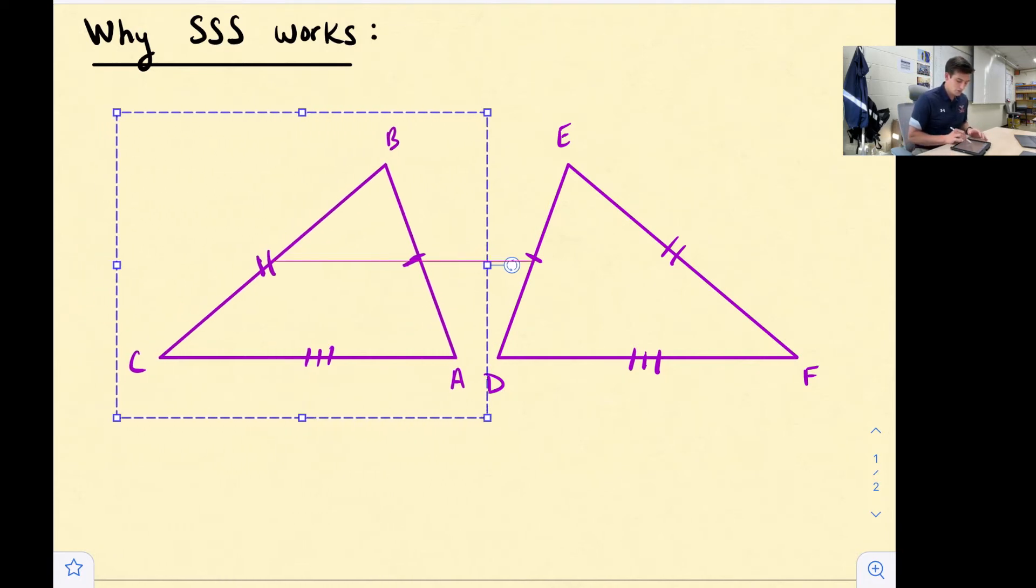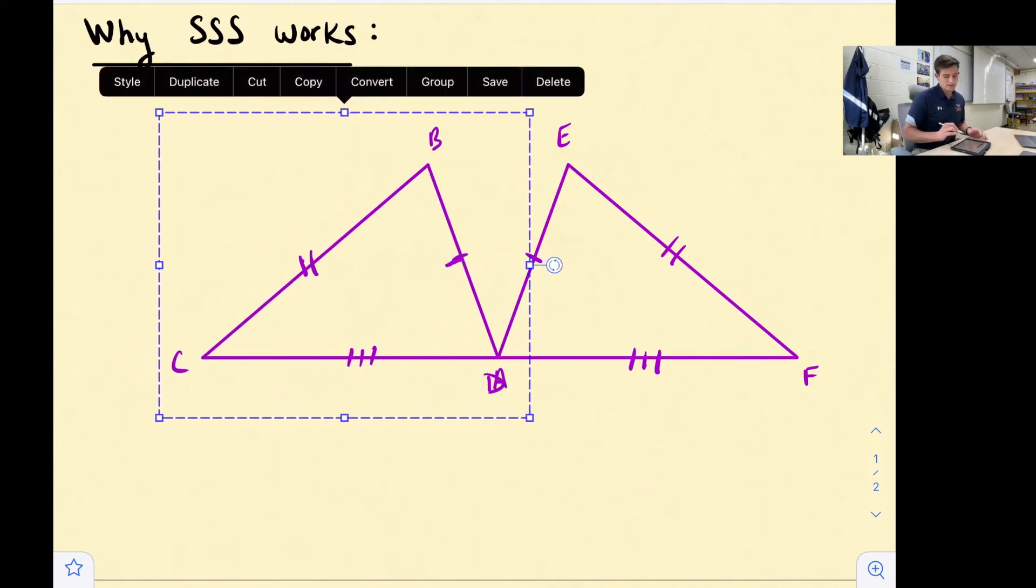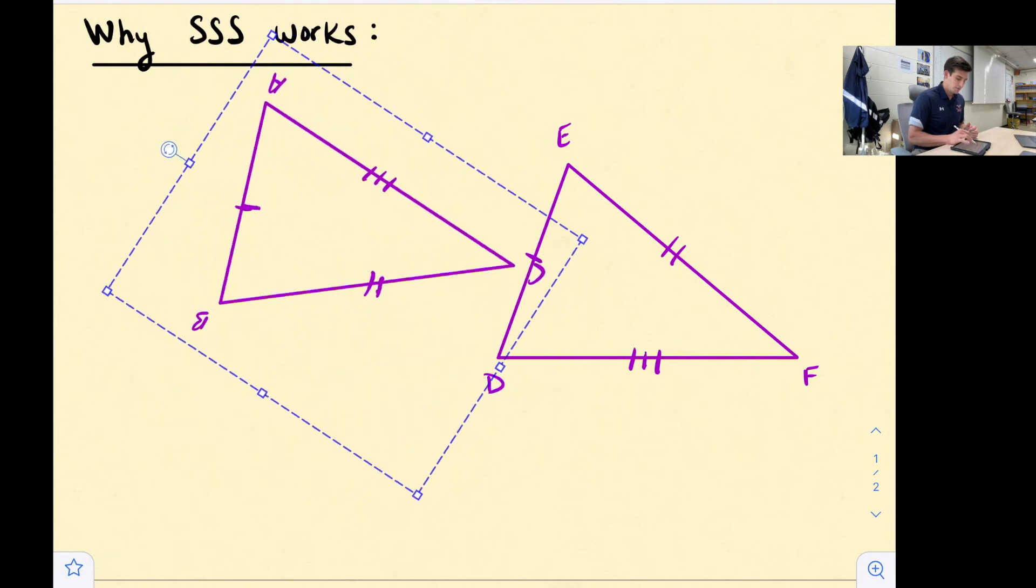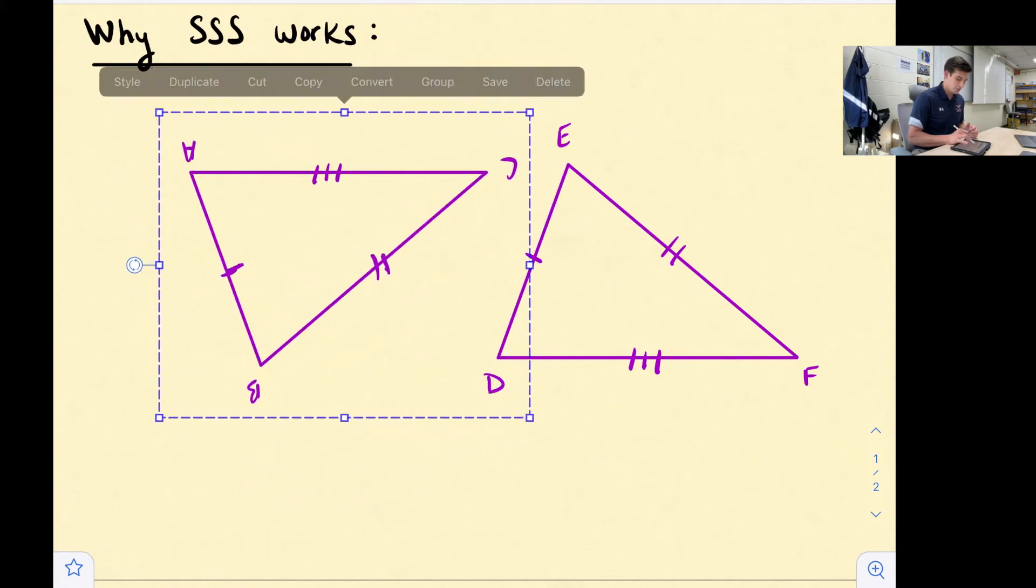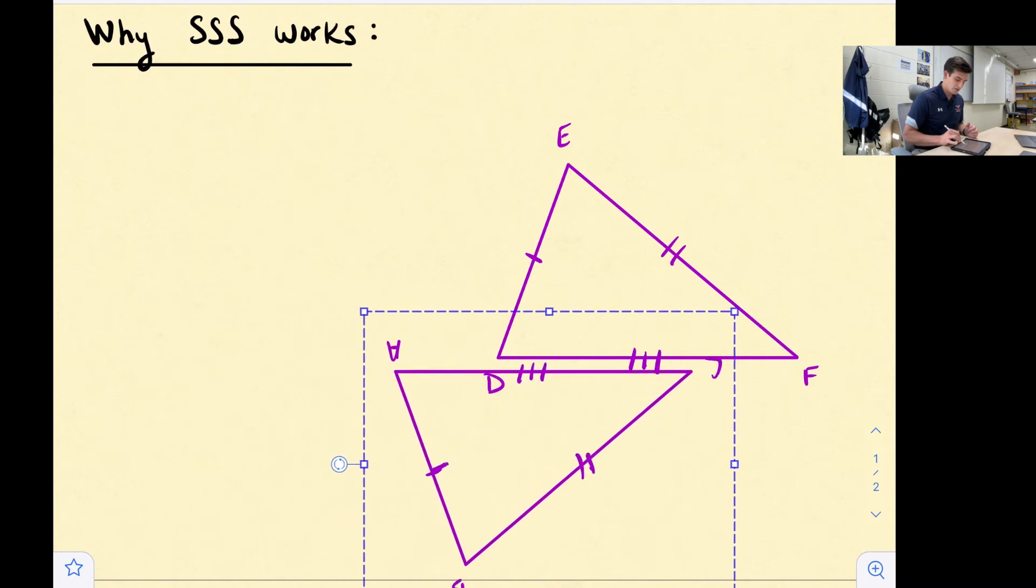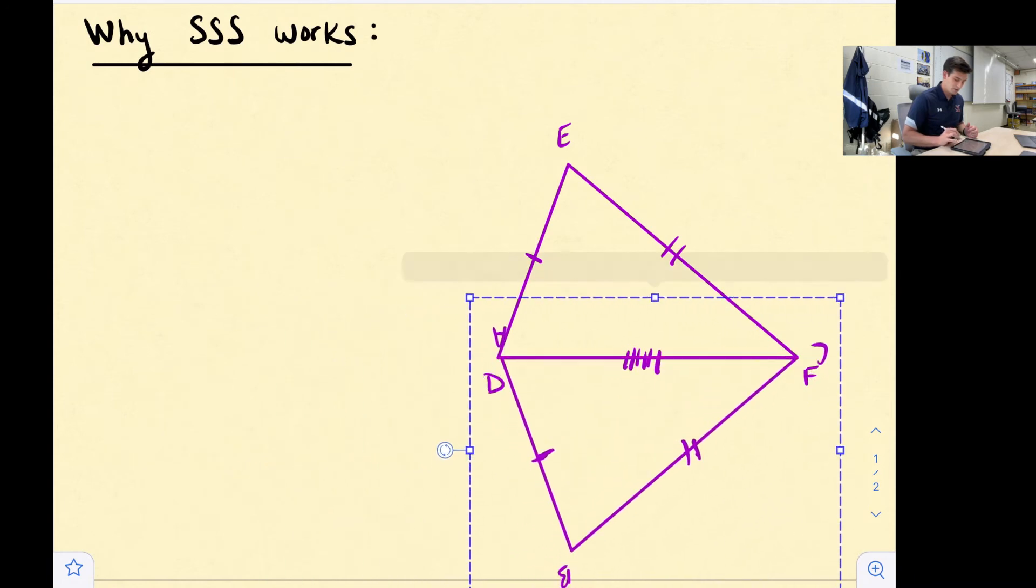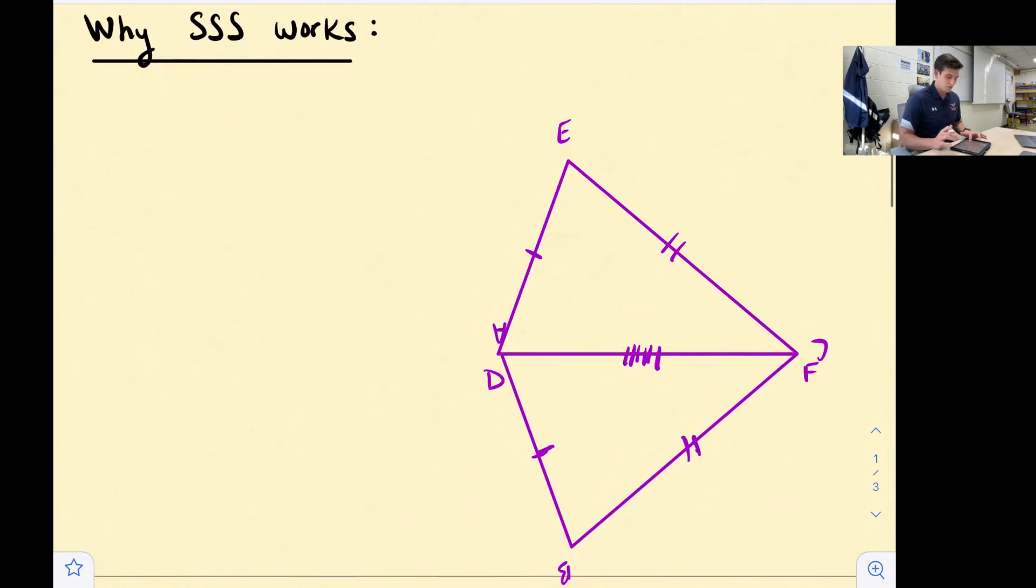Here's what we would do. We could translate, which is just a slide, so that it maps vertex A to vertex D. And then if I rotate here, I'm going to rotate like this and move my shape down a little bit to the right so that our two sides that are congruent map on top of each other.